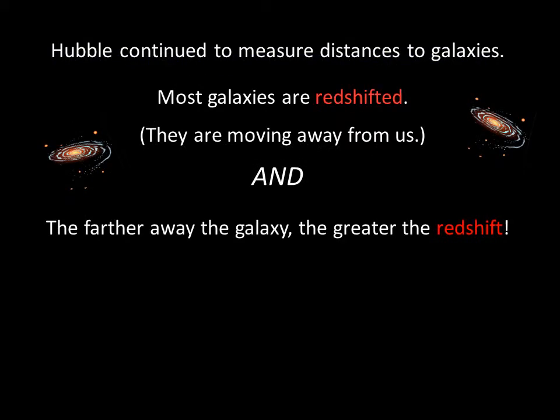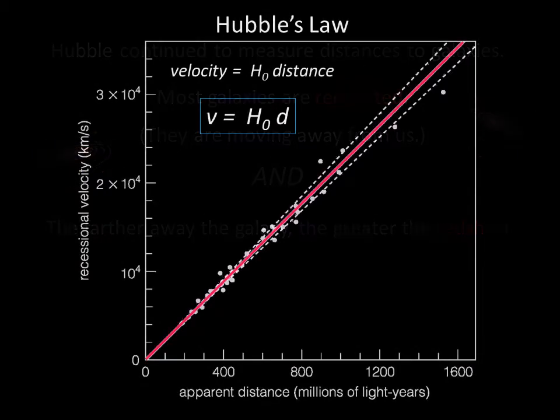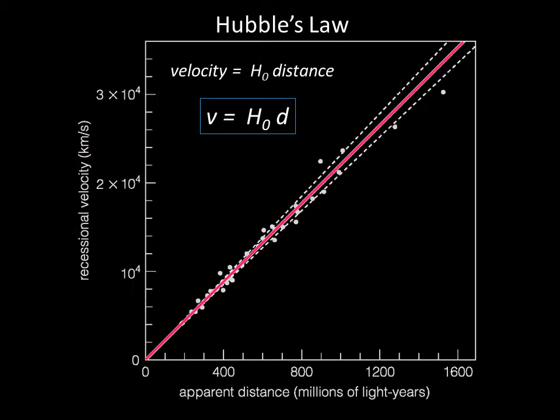We left off with Hubble measuring the distances to galaxies, and the finding that the farther the galaxy, the faster its velocity away from us. We also learned that Hubble's Law says the velocity of a galaxy is proportional to the Hubble constant times the distance to the galaxy.